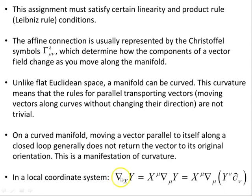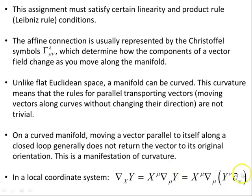In a local coordinate system, the covariant derivative of the vector field Y in the direction of the vector field X, in components, is X^μ ∂_μ Y. Expanding Y in terms of its components Y^μ ∂_μ, where ∂_μ is the differential operator representing the basis vectors, we get the covariant derivative in component form.